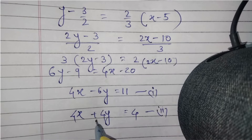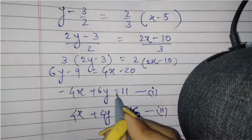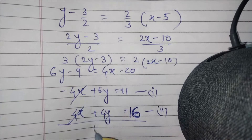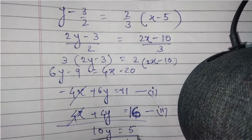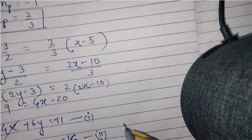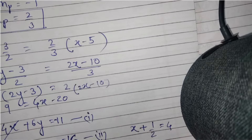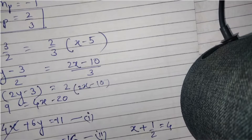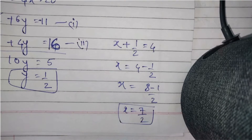Solving these two equations together will give the coordinates of P. Multiply x + y = 4 by 4 to get 4x + 4y = 16, then subtract the first equation 4x - 6y = 11. This gives 10y = 5, so y = 1/2. Substituting back: x + 1/2 = 4, so x = 4 - 1/2 = 7/2.